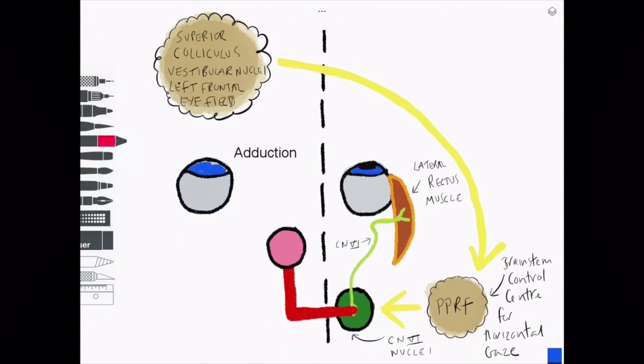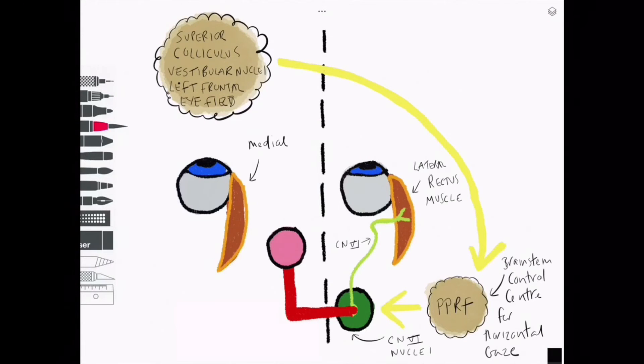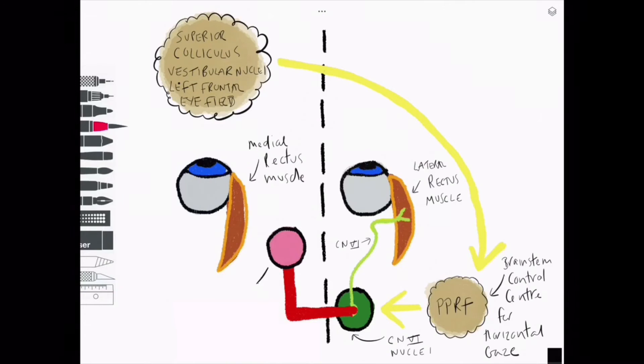Cranial nerve 3 is responsible for adduction of the eye, so we need to make sure that cranial nerve 6 and the contralateral cranial nerve 3 work perfectly in sync without any hesitation.